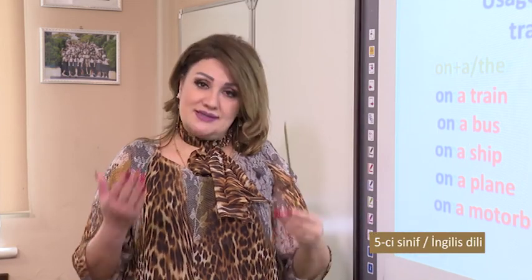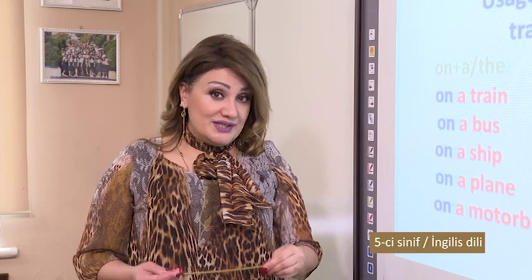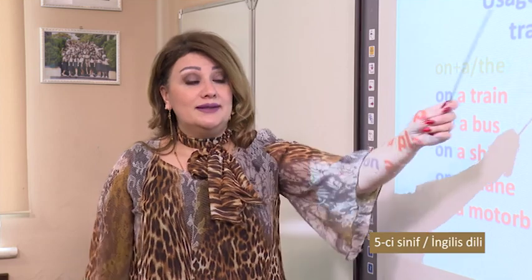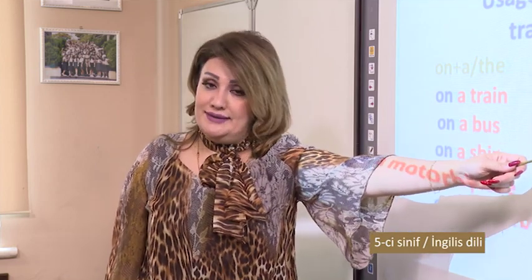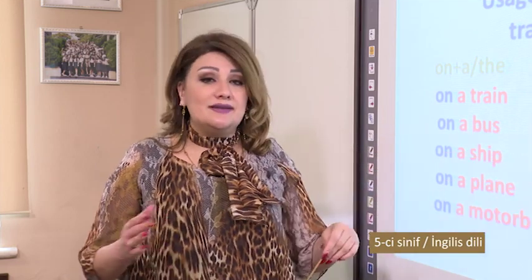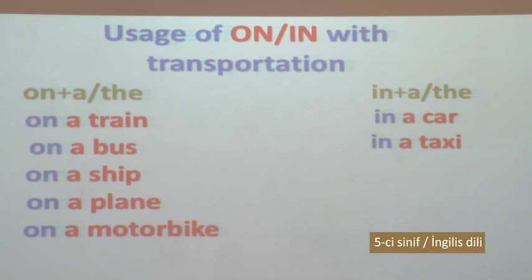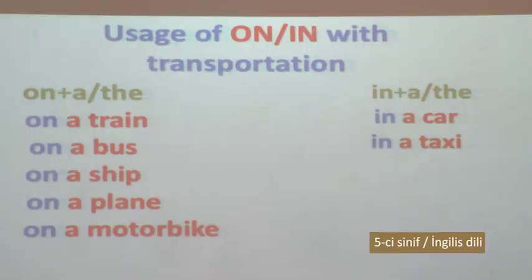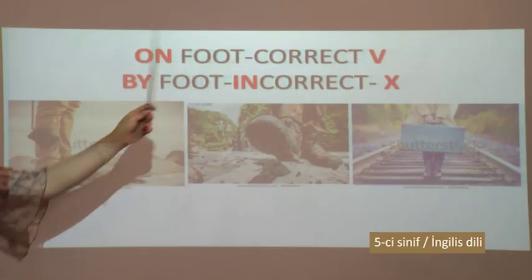On a train - we can stand up, we can walk on it. On a bus - we can walk on it and we can stand up. On a ship also - we can walk, we can stand up. But in a car or in a taxi - we can't stand up, we just go anywhere in a sitting form. On foot is correct, by foot is incorrect.